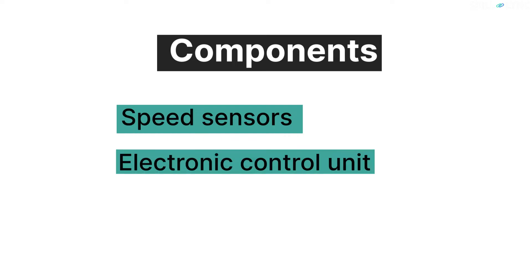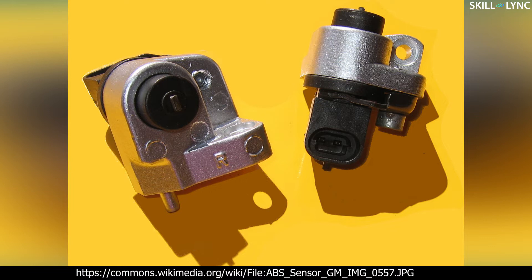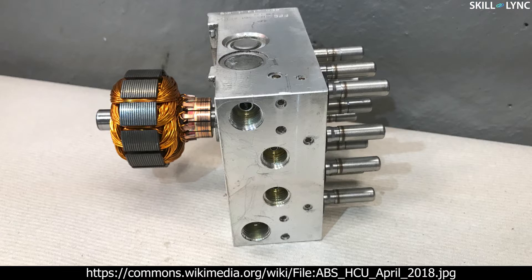The anti-lock braking system consists of four main components: speed sensors, electronic control unit, hydraulic control unit, and valves. Speed sensors are attached to the wheels for monitoring the speed. They help in finding the acceleration and deceleration rate of the wheels. The electronic control unit receives signals from the sensors and calculates the required pressure to be applied and sends it to the hydraulic control unit. The hydraulic control unit then applies or releases the brake pressure based on the signal received from the ECU.